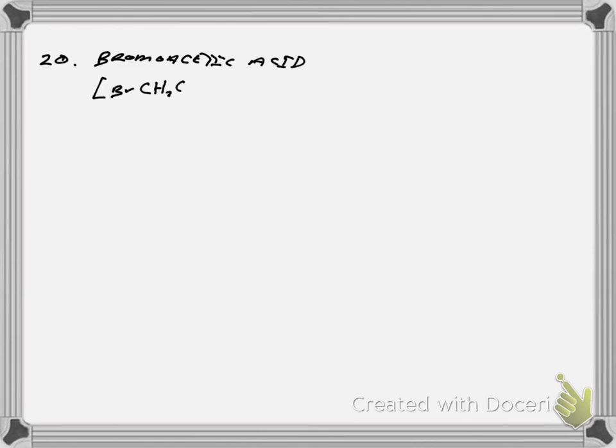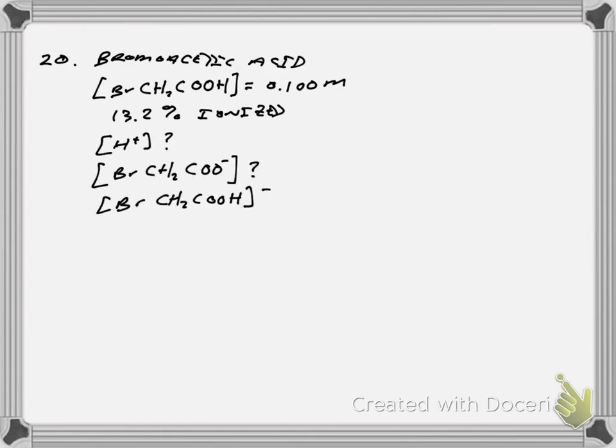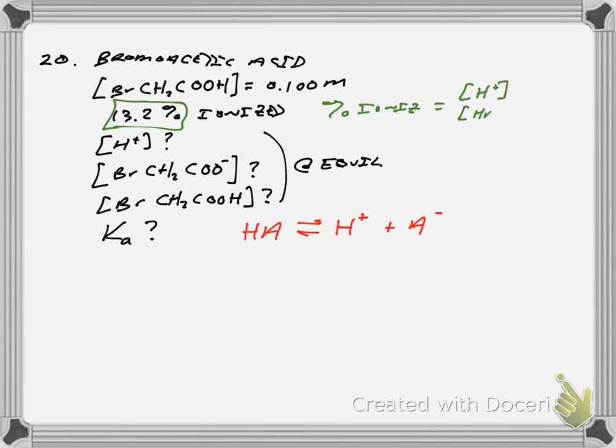And then, next, bromoacetic acid, went ahead and wrote it out this time, has an initial concentration of 0.1 molar. And then this introduces a new term in these problems, and that is the percent ionization. It says it's 13.2% ionized, and it wants us to find equilibrium concentrations and the Ka. So I write the equation real quick. It's going to be, again, monoprotic. It's going to give one proton for every anion left behind in each molecule of acid. And percent ionization is the concentration of the H plus ions over the initial acid concentration times 100. And so just plugging in my 13.2%, and the initial concentration of the acid gives me that the H plus concentration is 0.0132. And so that's the first thing I'm supposed to find, which is the H plus equilibrium concentration.